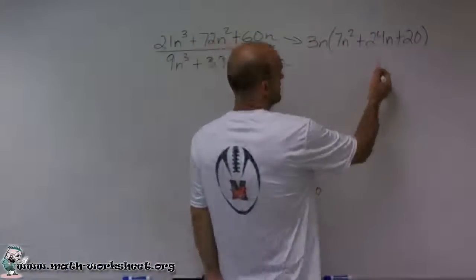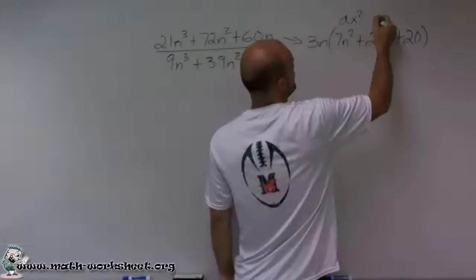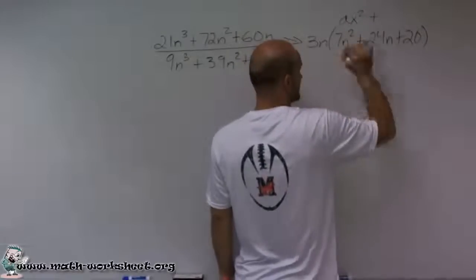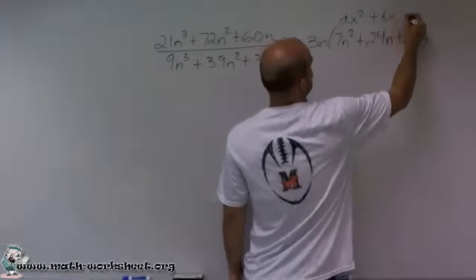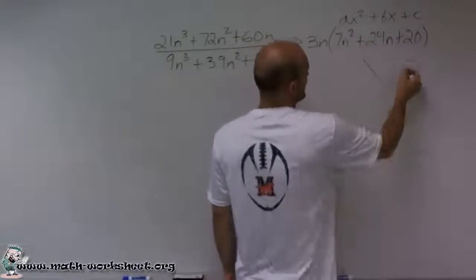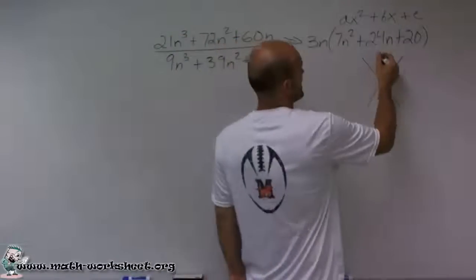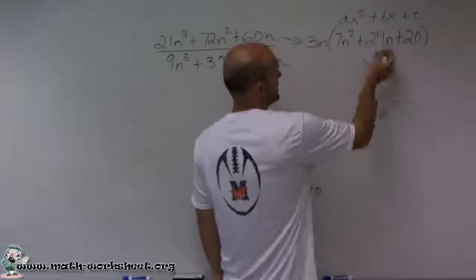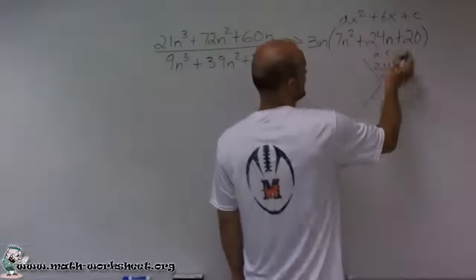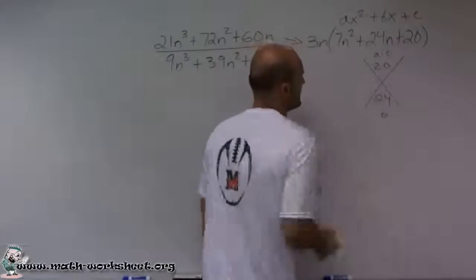There's a couple of ways. If you remember, your trinomial is in the form of a quadratic, which is ax squared plus bx plus c, where I can use this divisionary tool to help me say a times c over b. So a times c is 7 times 20, and then b is 24.